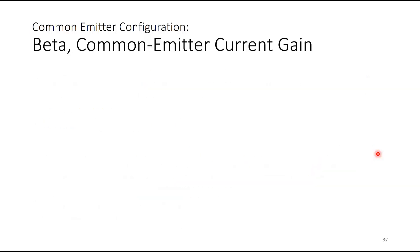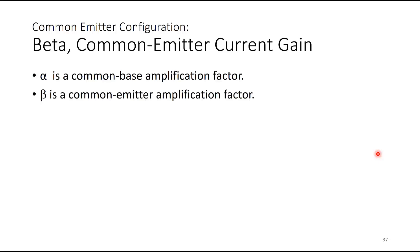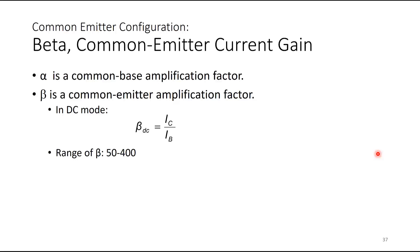Beta is the common emitter current gain. Previously we had alpha as the common base amplification factor; now for common emitter, the amplification factor is called beta. In DC mode, β = IC / IB, and it is in the range of 50 to 400. Unlike alpha which is almost equal to 1, beta is large — which makes sense because IB is in the microamp region and IC is in the milliamp region, so you would expect beta to be in the hundreds.